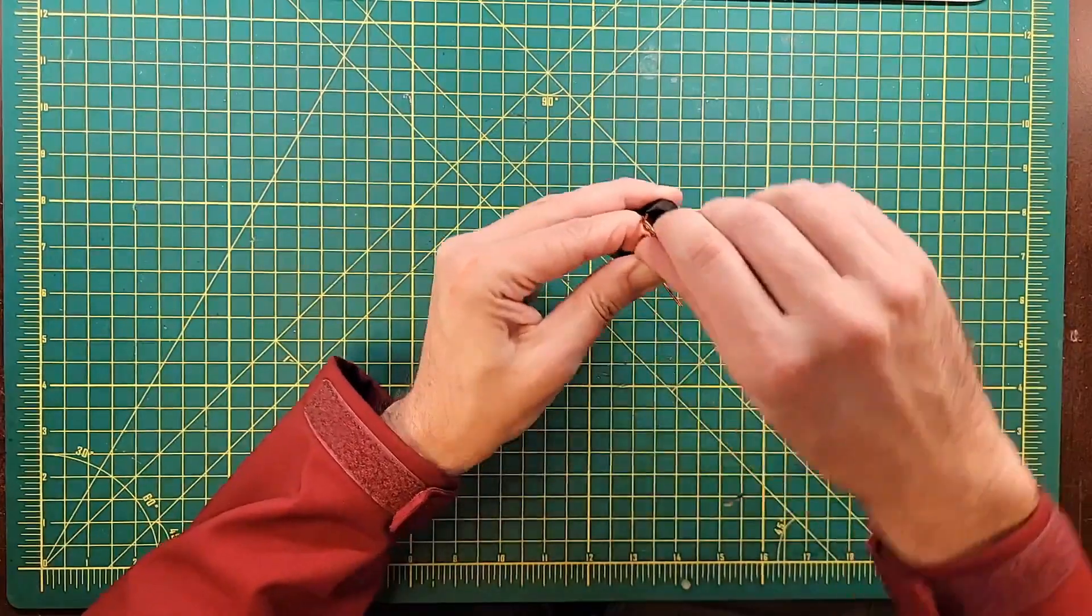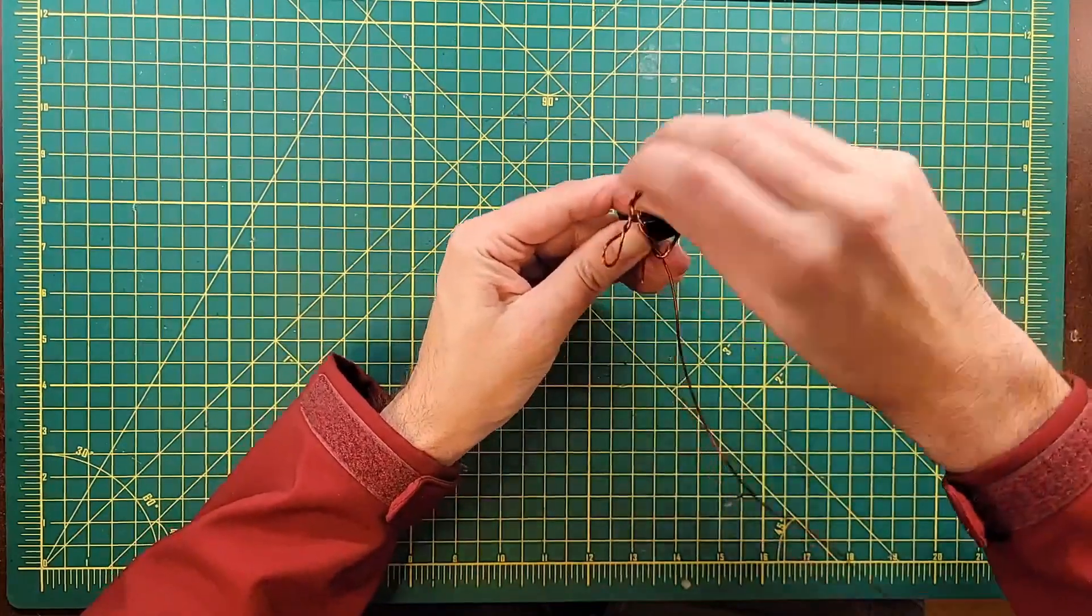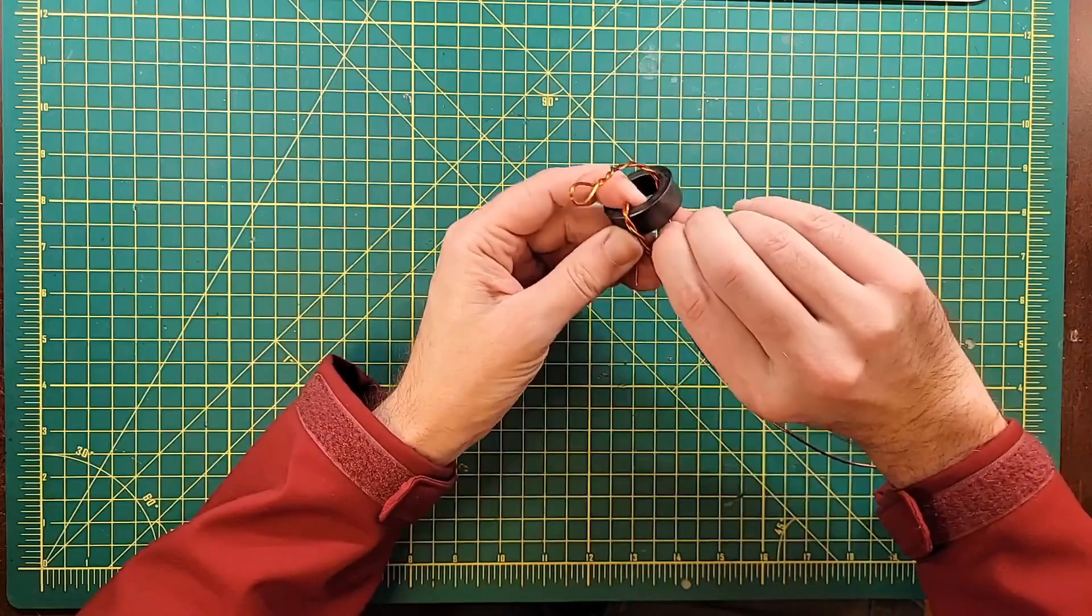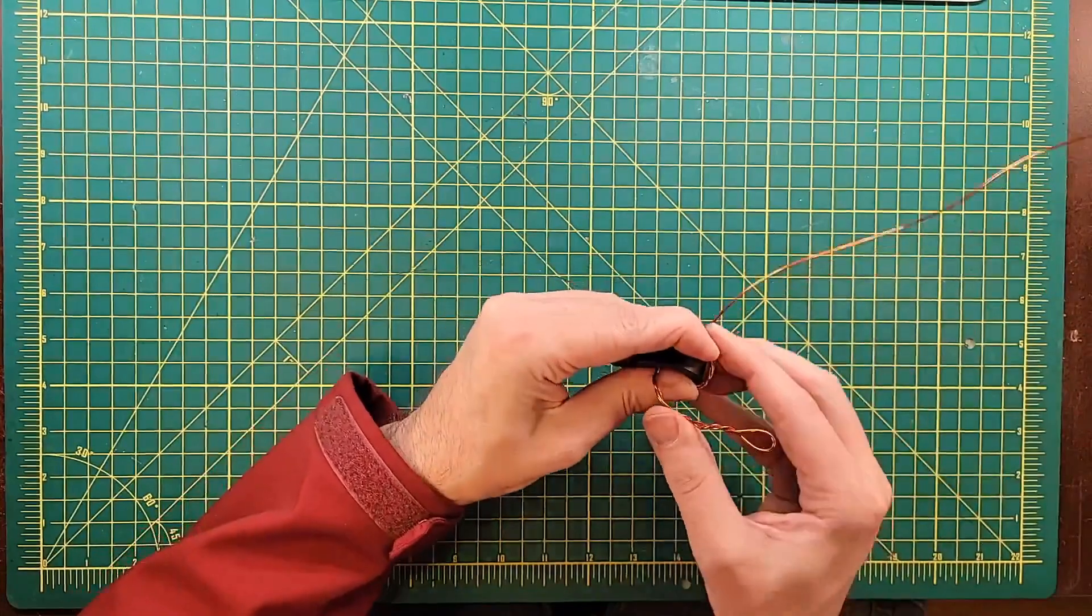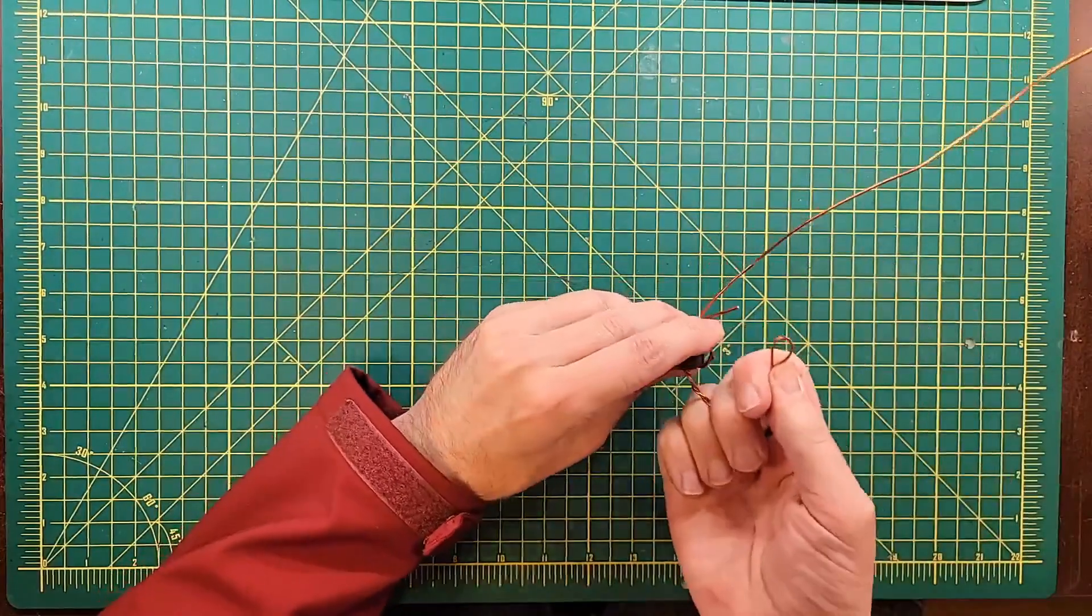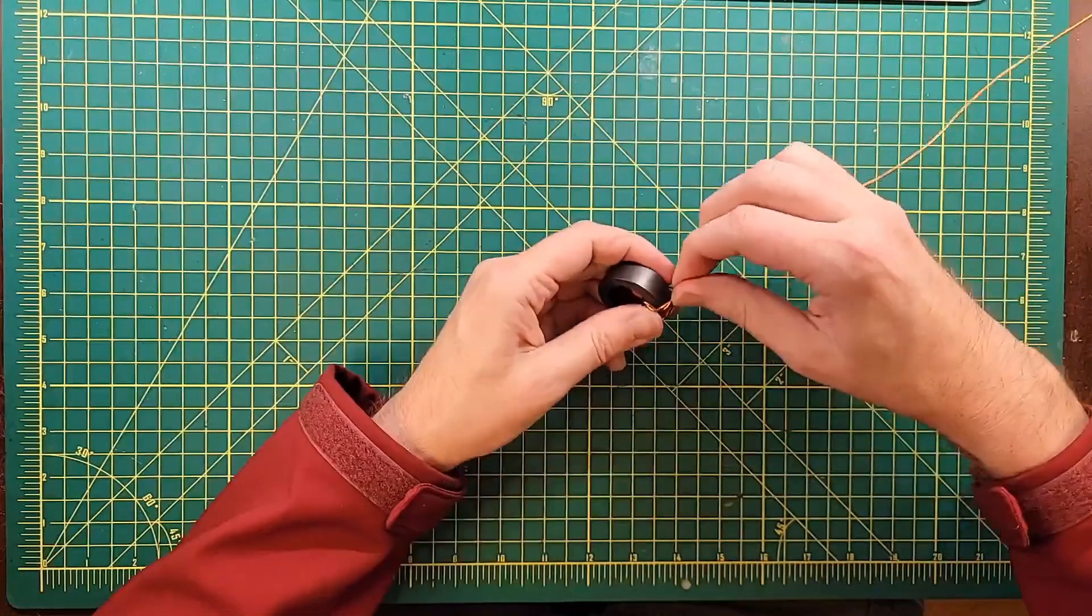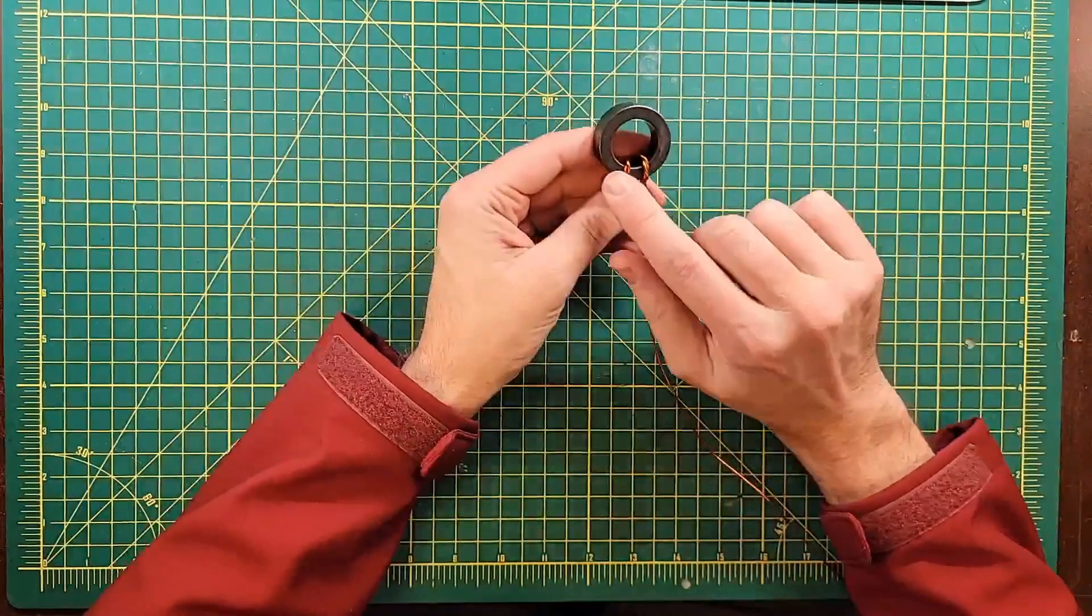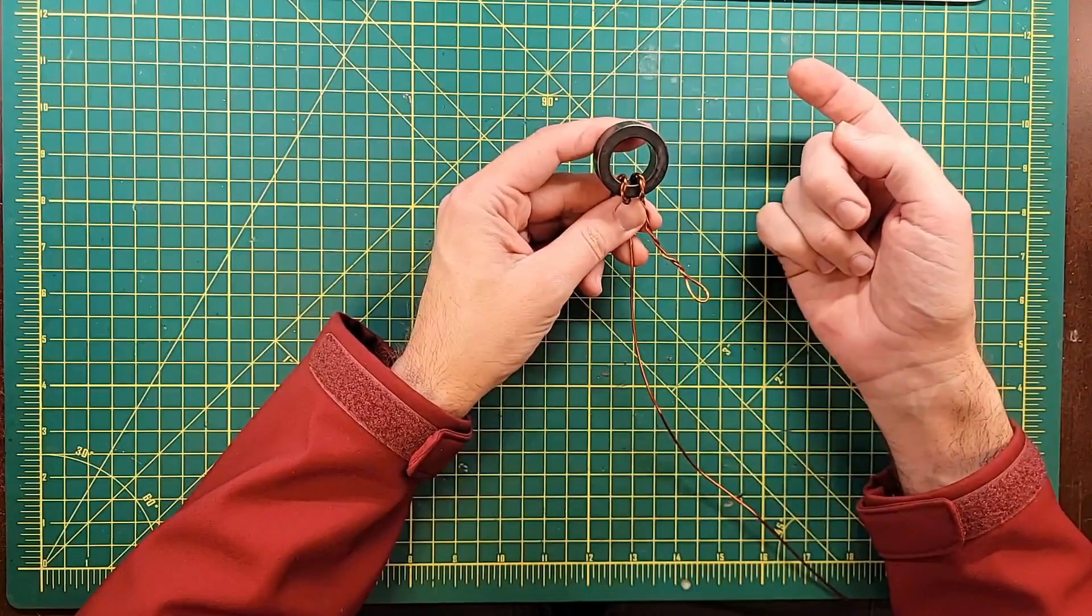You want to try and be tight on the core. And whatever it takes for you to get that job done is whatever it takes. I'm not going to be judgmental about it. And that is the hardest part done. We've got our two turns of our primary through the core already. Every time it passes through the center of the core is considered a turn.